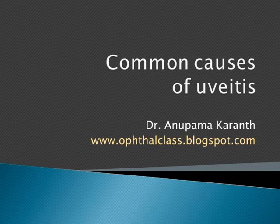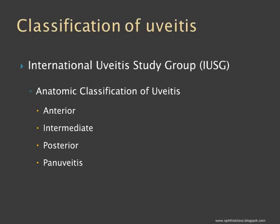In this class, we shall see some common causes of uveitis. Last class, we have seen the IUSD classification for uveitis — the anatomical classification which divides it into anterior, intermediate, posterior, and pan uveitis, depending upon where the predominant inflammation is in the uveal tract. Now we shall see some common causes for each of these uveitis types.